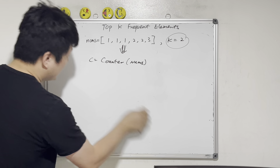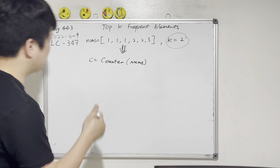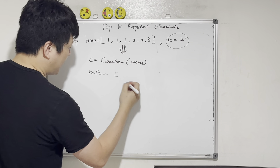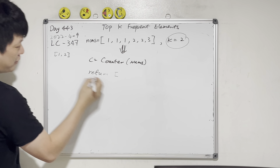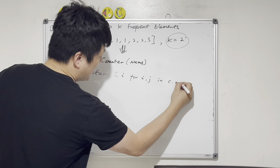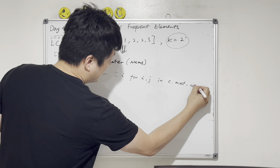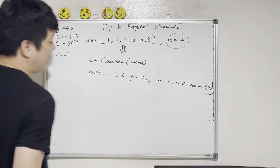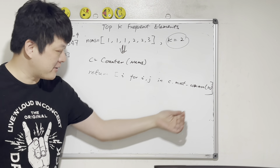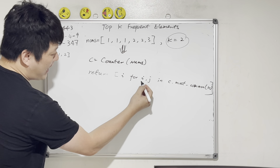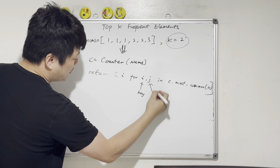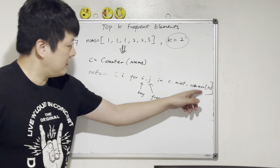So we can just return: return [i for i, j in c.most_common(k)]. c.most_common(k) returns the items in order of frequency, and the first k items. Here i is the key (the number) and j is the frequency. We want to return those numbers — make sense?